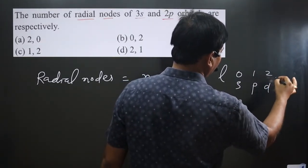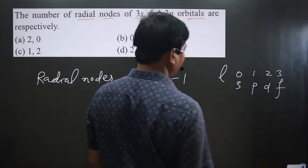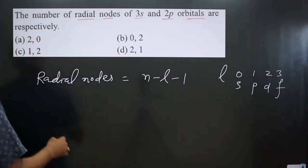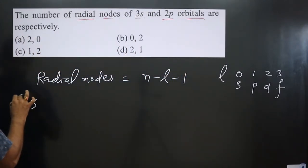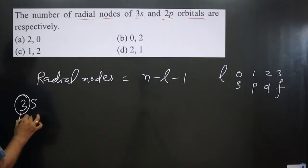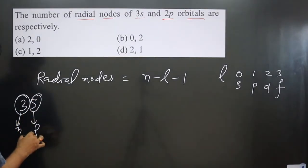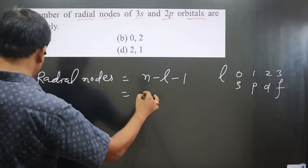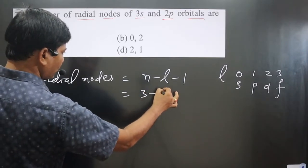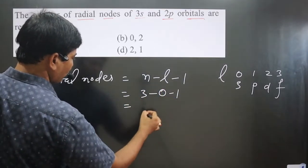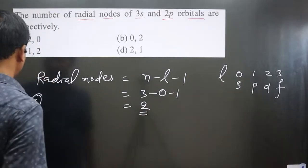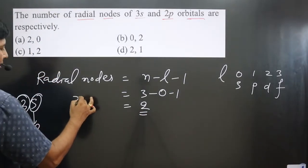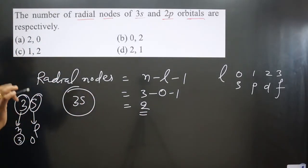First we calculate for 3s. This is the n value and this is the l value. n value is 3 and l value is 0 because l value is 0 for s orbital. In this case, n value is 3 minus l value 0 minus 1, so 3 minus 1 equals 2. For 3s we get 2 radial nodes.